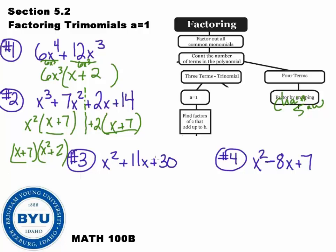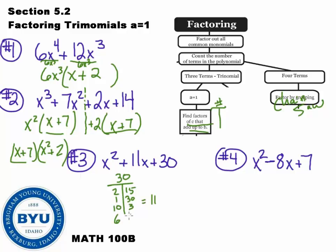Number 3: no common stuff. Three-term polynomial, with c equal to 30. I need to find factors of 30 that add to 11. Let's see: 2 and 15 — no; 1 and 30 — no; 10 and 3 — no; 6 and 5 — that adds to 11. I'm going to use those in my parentheses: x plus 6 and x plus 5.